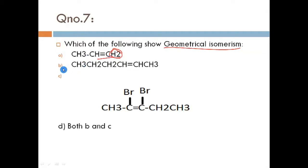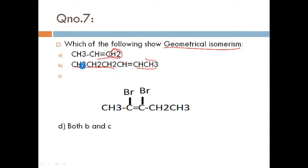Now looking at option B: one double bonded carbon has hydrogen on one side and CH3 on the other, and on the other carbon there is one hydrogen and one propyl group attached. So it means option B will show geometrical isomerism.